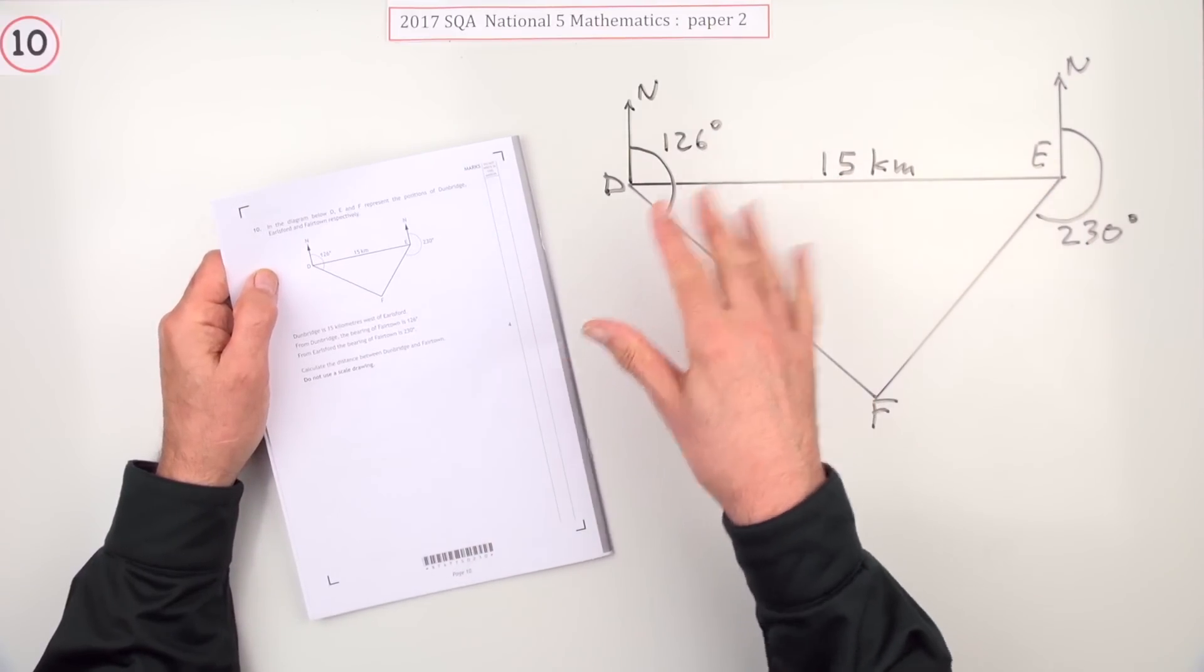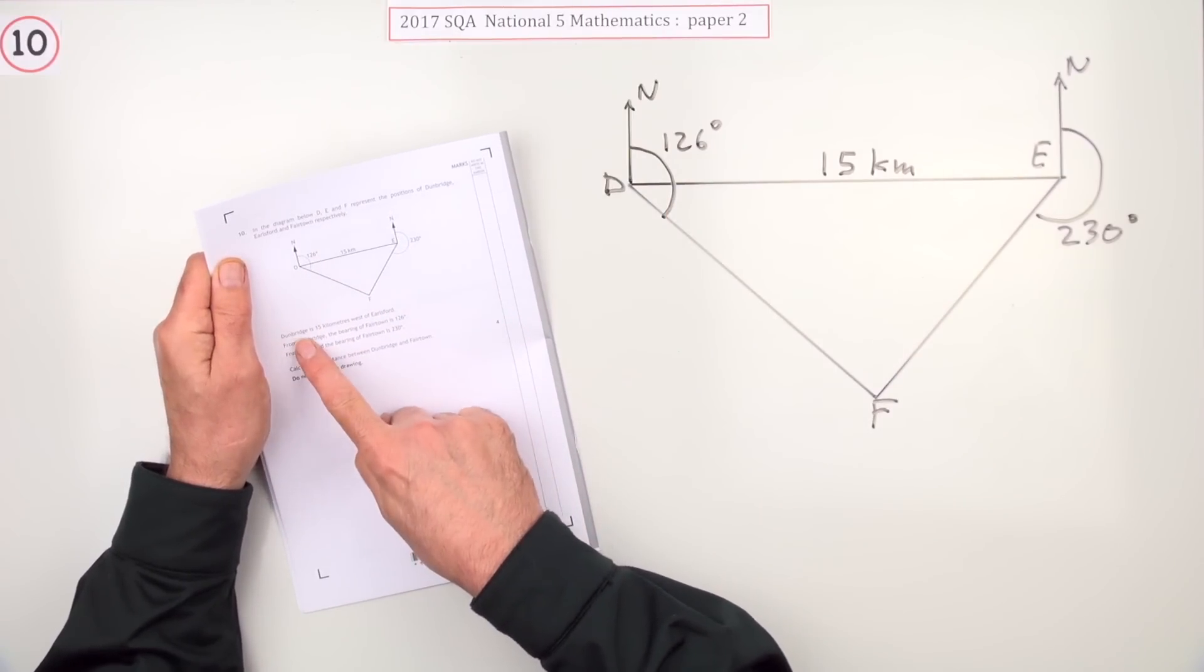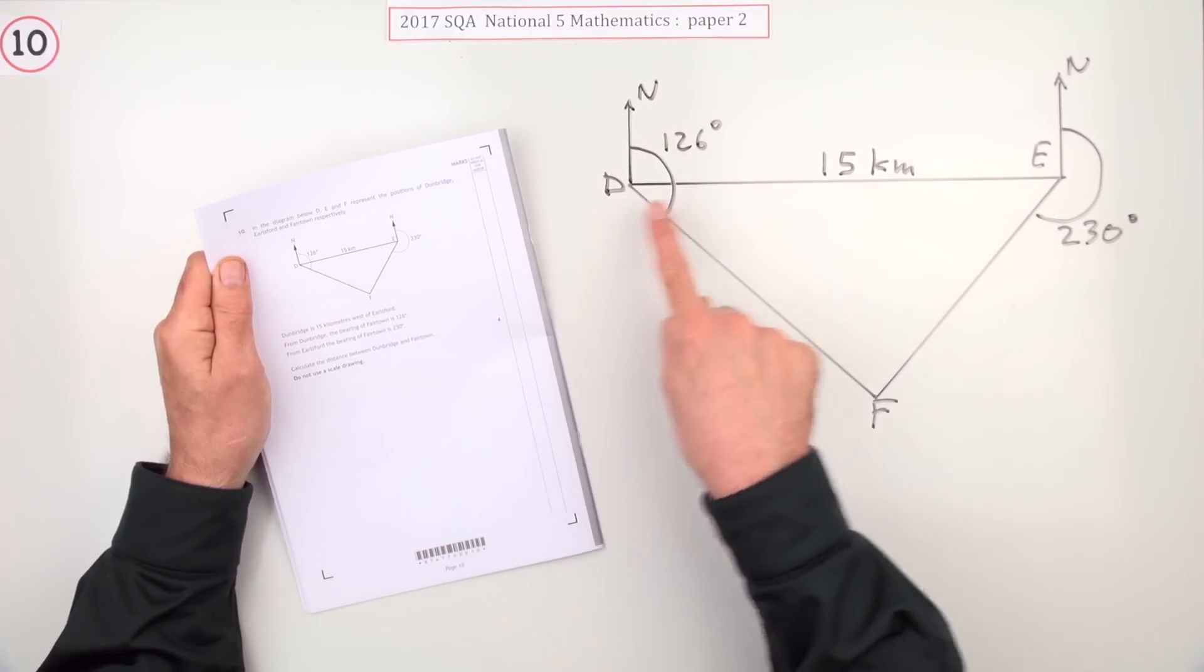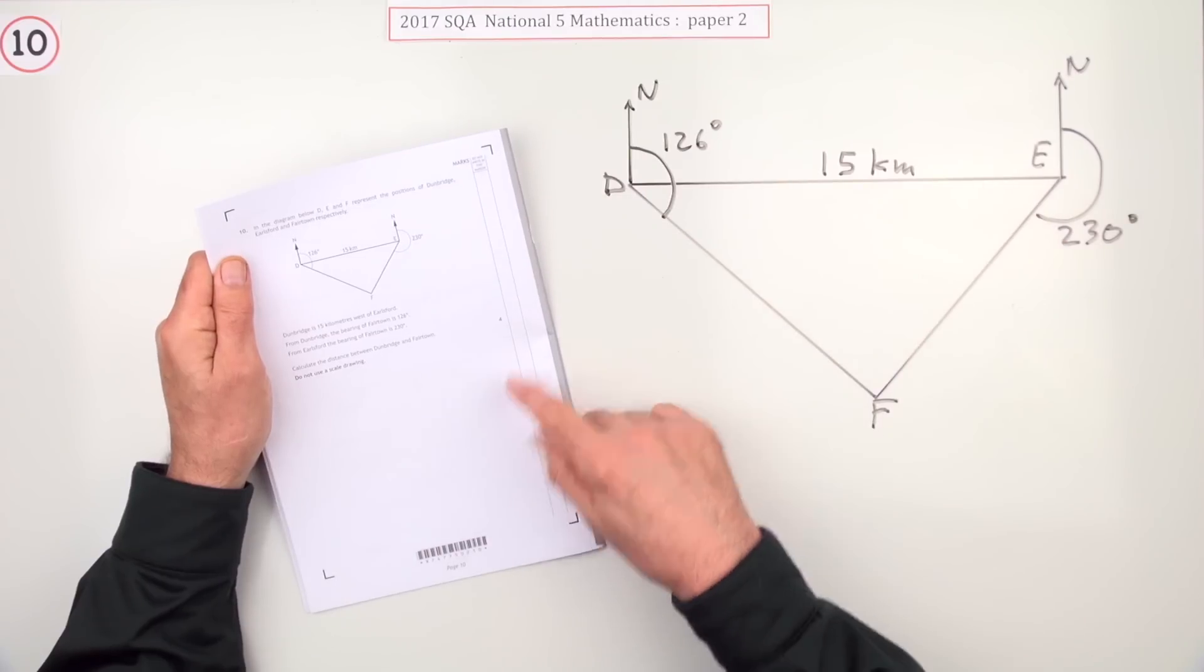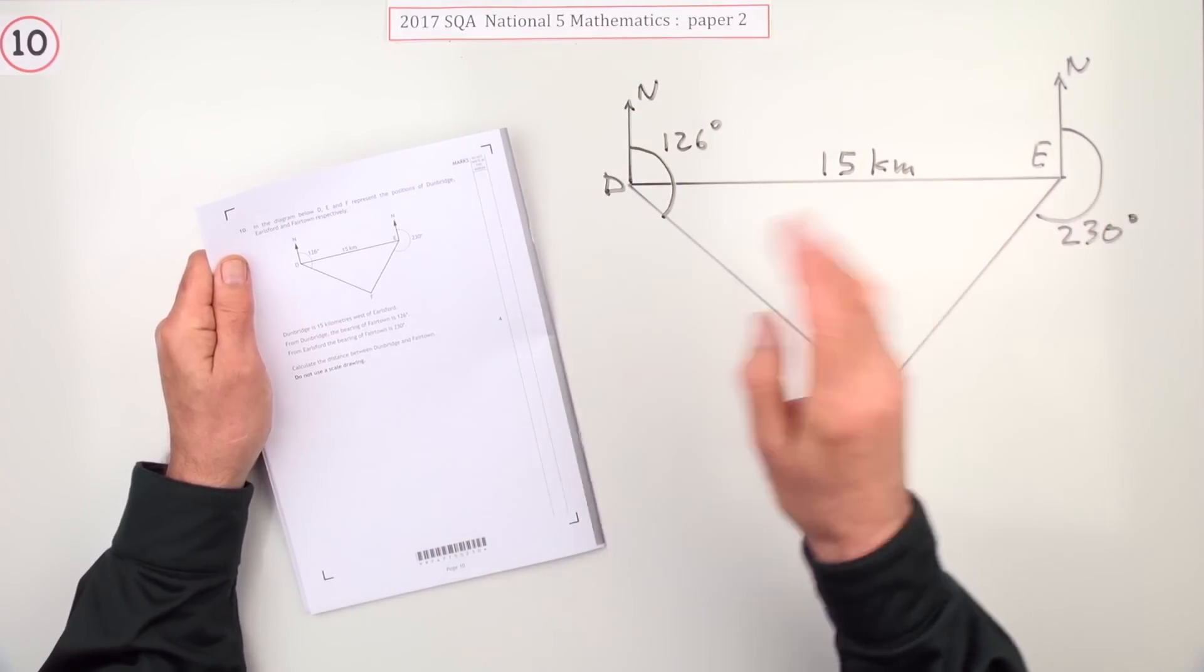Bearings! But they're not bad. They're actually quite harmless bearings in this one because it says this. D and E, these two towns, lie east-west. D is west of E. So there's a horizontal line that's at right angles to the north.